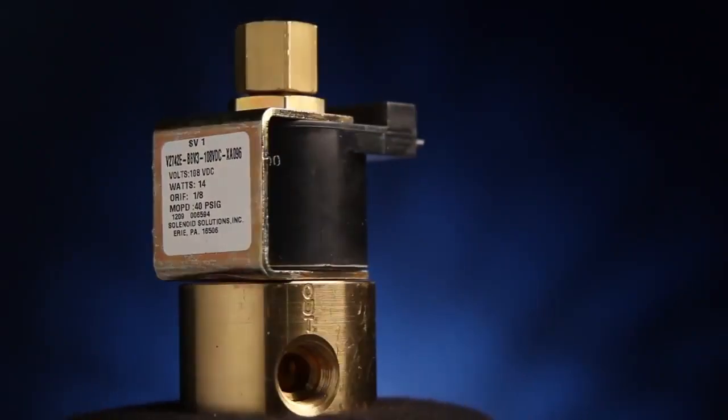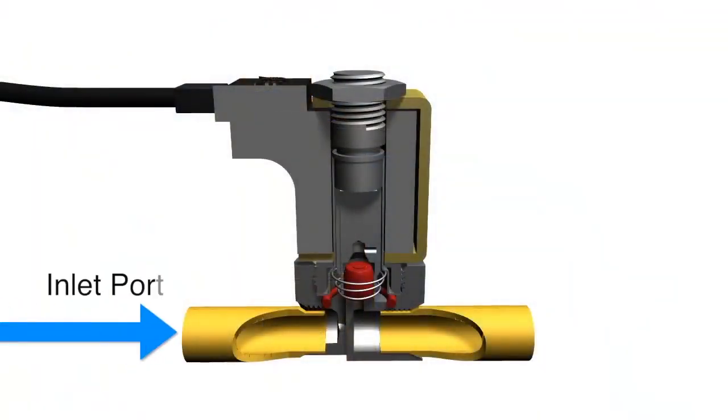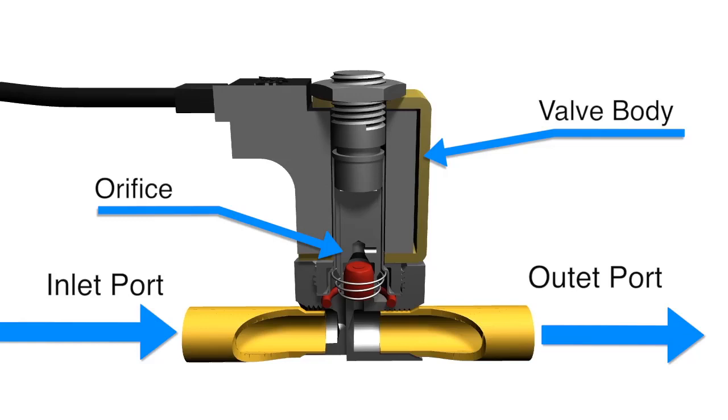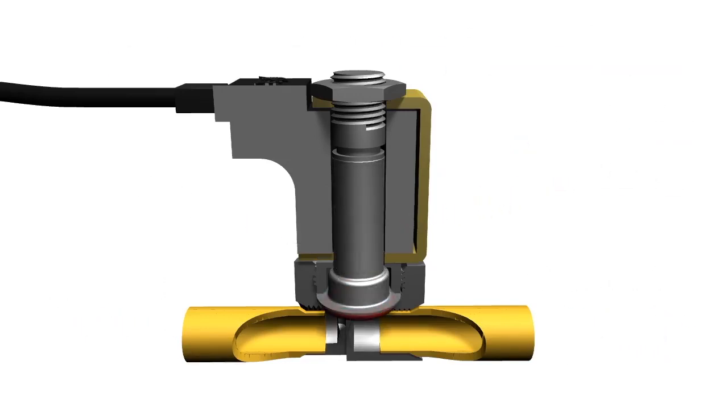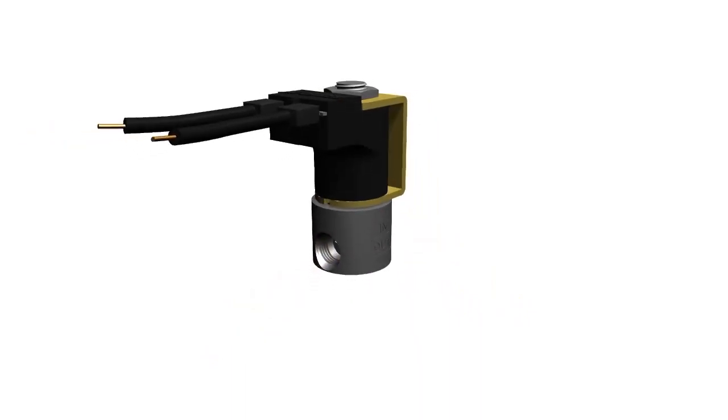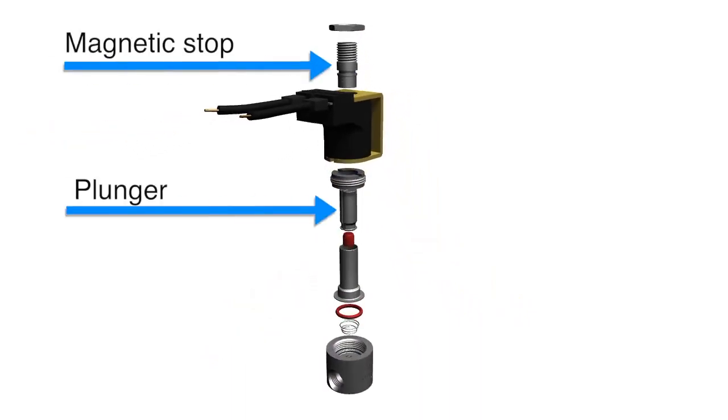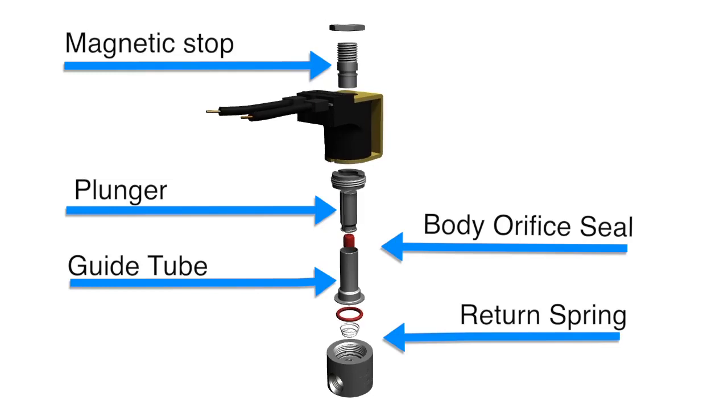Solenoid valves have a number of standard components: inlet and outlet ports, an orifice, an electric coil to create a magnetic field, magnetic stop, plunger and guide, seals, and spring.